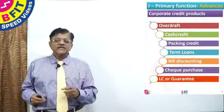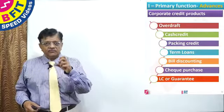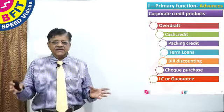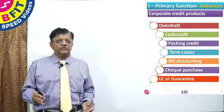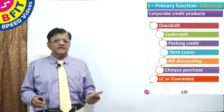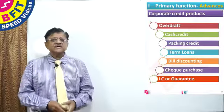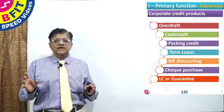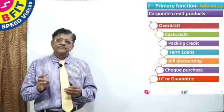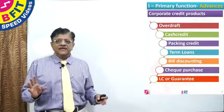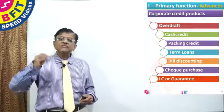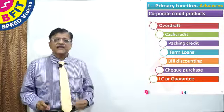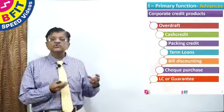These are the various corporate products — not an exhaustive list, only illustrative: overdraft, cash credit, packing credit, term loans, bills discounting, cheque purchase, LC or guarantee. These are the major credit products, both retail as well as corporate, for a bank. Extending credit is the second most important function of a bank, because having taken deposits, a bank cannot remain still — it has to use that money for giving loans.